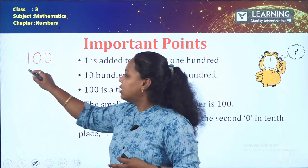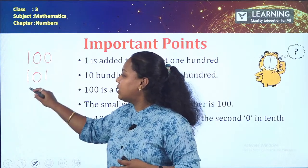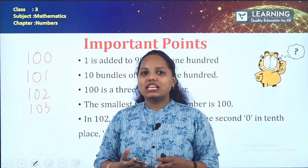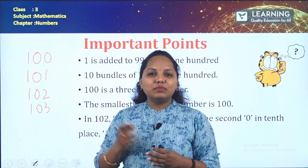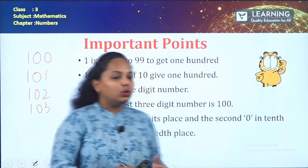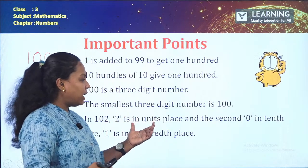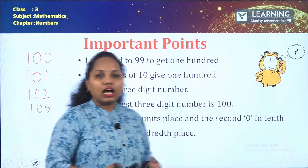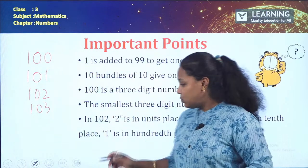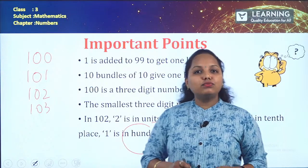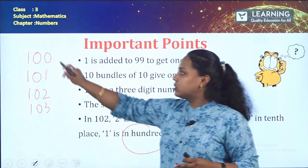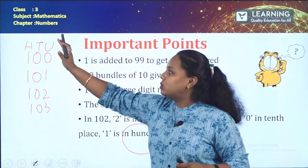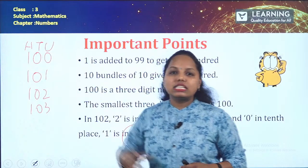After 100, you keep adding 1: 101, 102, 103, and so on. In the number 102, the digit 2 is in the units place, 0 is in the tens place, and 1 is in the hundreds place. This introduces one extra place value — the hundreds place — that you will be learning in this standard.